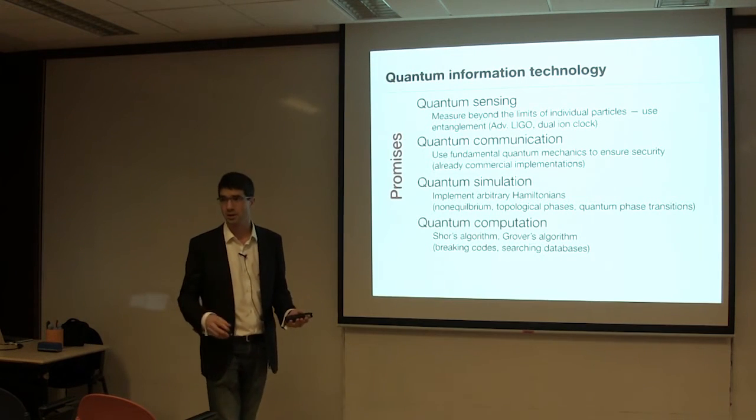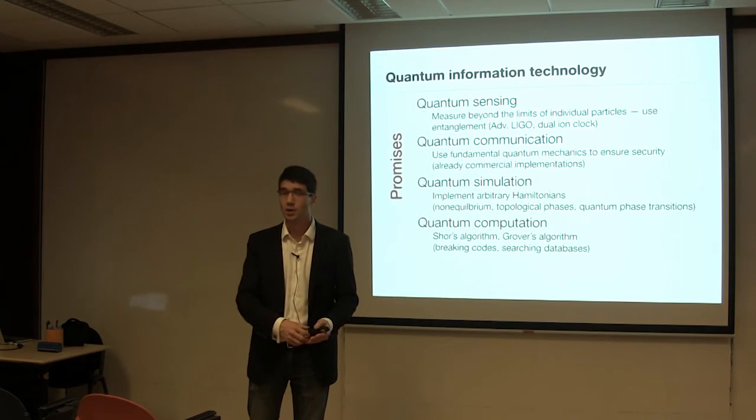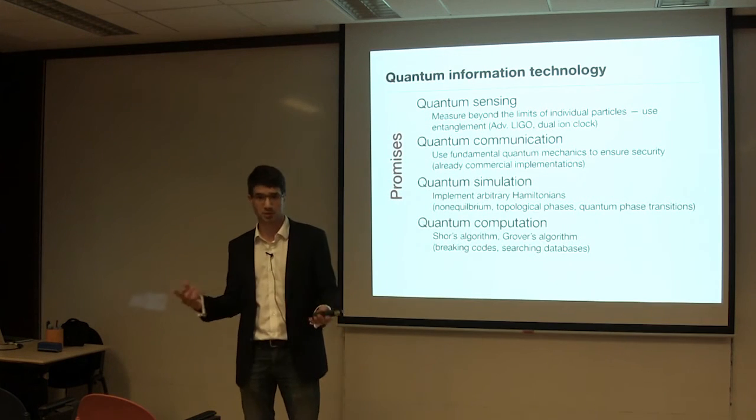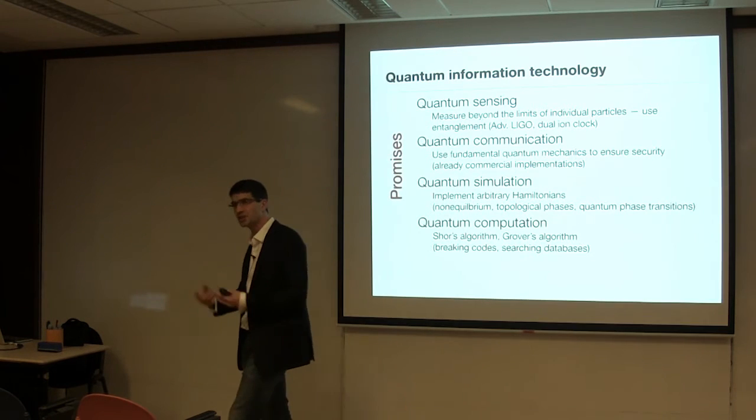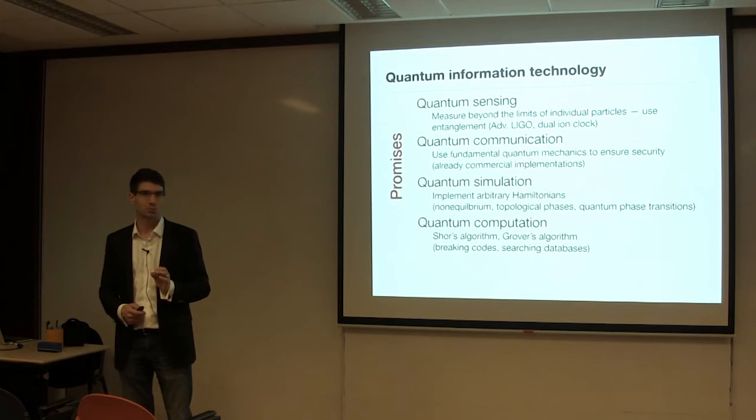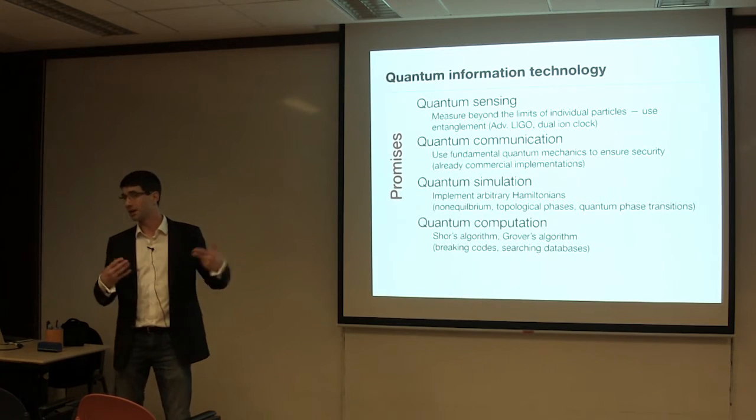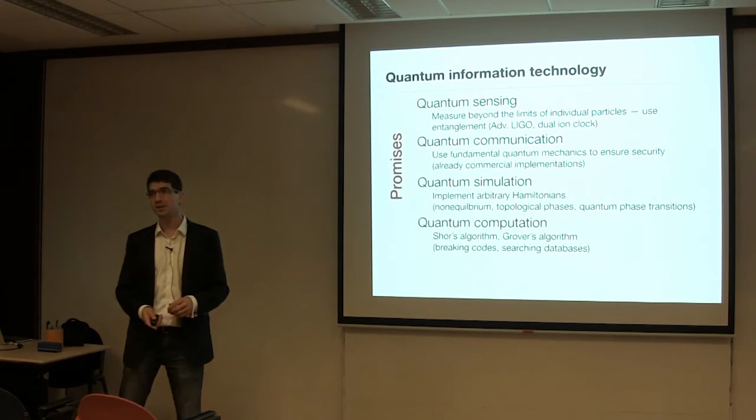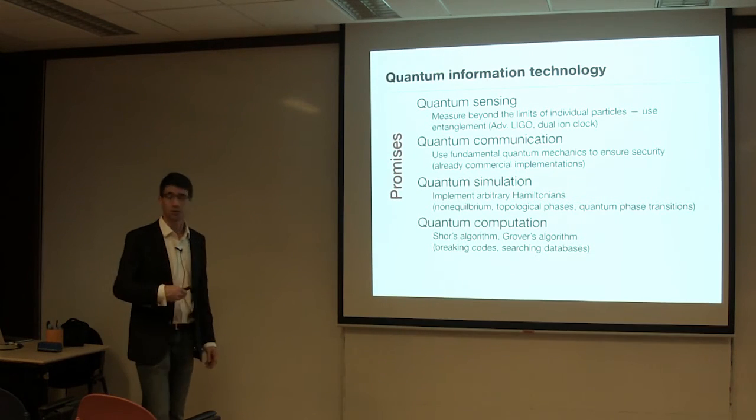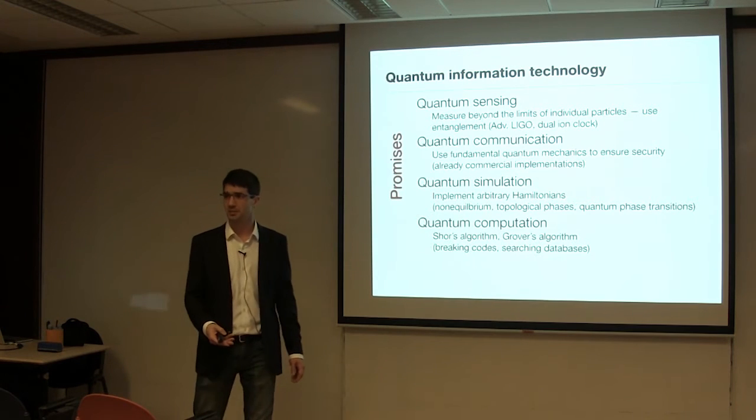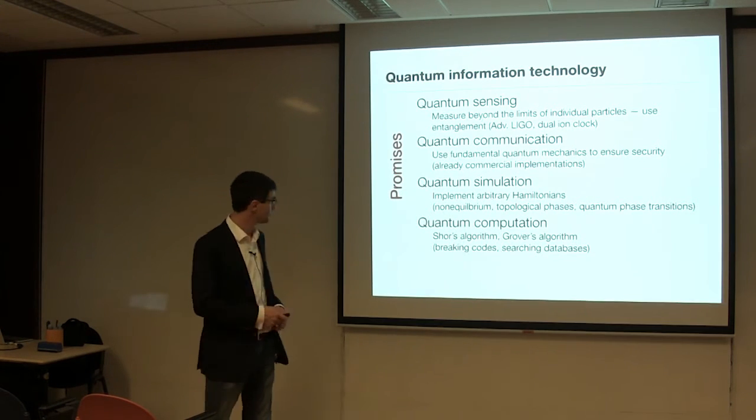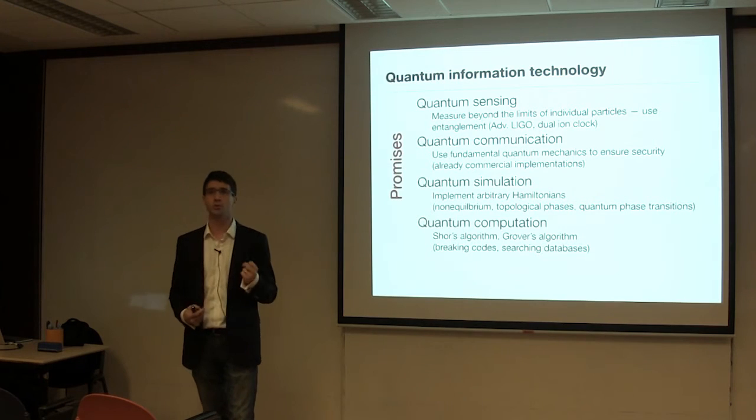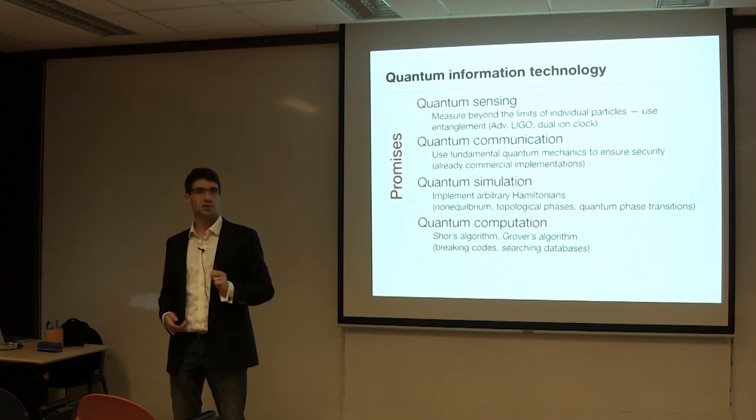But if we look forward, we see these sort of great promises ahead of us. So we have quantum sensing where we can start to use entanglement to go beyond the limits of individual particles. This is being suggested and used in what's called advanced LIGO, the gravitational wave observatory, where they're using it to measure strain changes in spacetime ever more accurately. It's also used in some of the most recent clocks, both the strontium optical clock and the dual ion clock, where the many-body effects actually matter for actually determining what the frequencies that you measured.